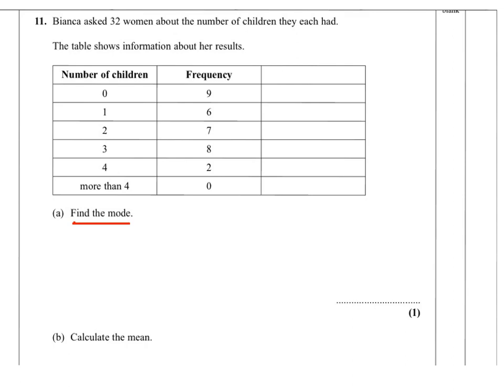As you can see, the highest frequency here is 9. This means 9 women have no children. That's the most popular one or the most frequent one. So the mode is 0 children.